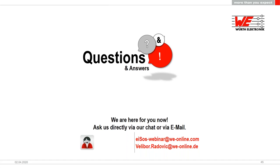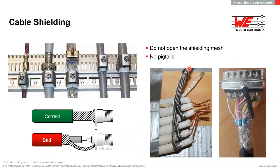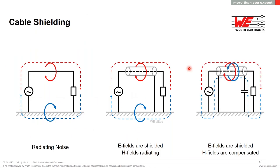The next question: should shielded cables be terminated on both ends? Basically yes. If you terminate on both sides, the signal path and return path on both sides will be much closer to each other, making the effective antenna loop much smaller.